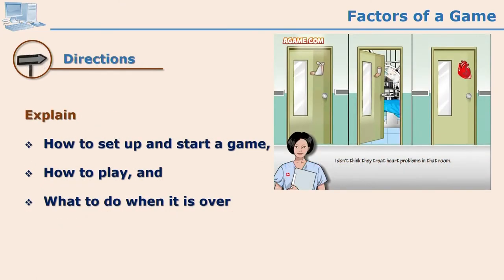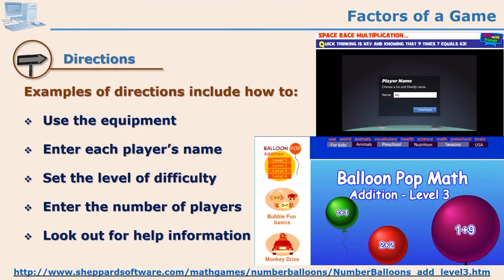Directions are essential in any game — how to set up a game, how to start, what is the procedure, how to play, and what to do when the game or one level is over. All those directions need to be clearly given. For example, in a screenshot, if a learner clicks on the wrong room, the doctor tells them 'this is not the room for heart surgery,' directing the learner to click on the right door. Learners also need directions on how to use equipment, entering their name, deciding difficulty level, or choosing the number of players. All these directions must be well written by the designer.